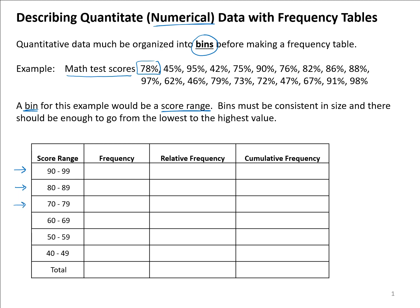The other thing you want to do is make sure you include all of the data values in your bins from lowest to highest. You want to make sure that you have a bin that covers from the highest all the way down to lowest with this consistency of size. My highest value in this data set of test scores, if I scan through, looks like a 98.